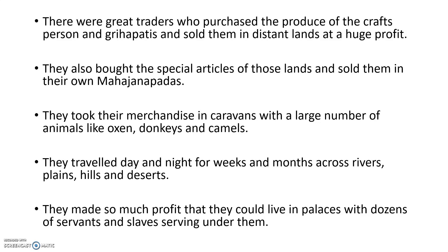They would add more price and sell there, and also bought the special articles of those lands and sold them in their own Mahajanapada. They took their merchandise in caravans with a large number of animals like oxen, donkeys and camels.